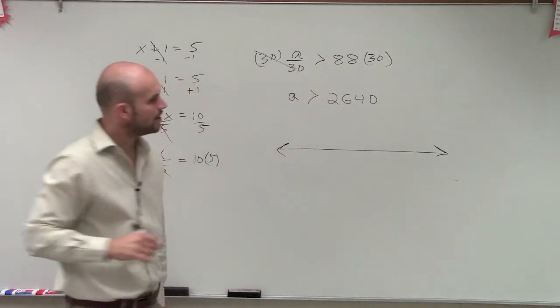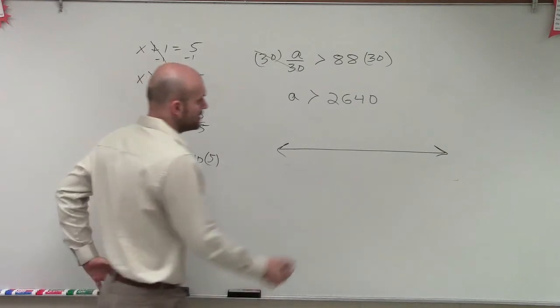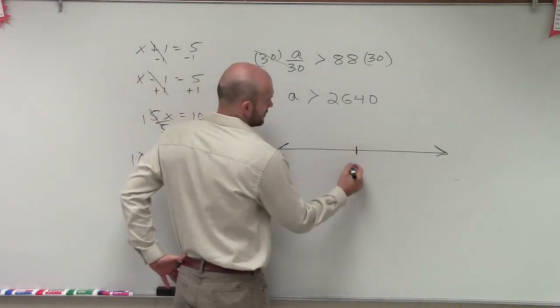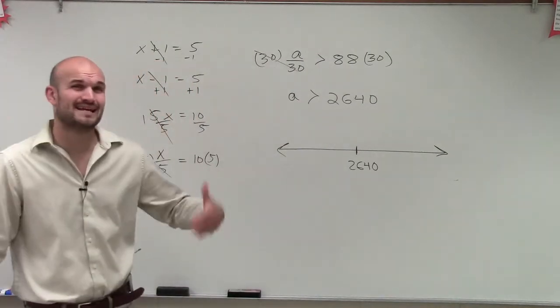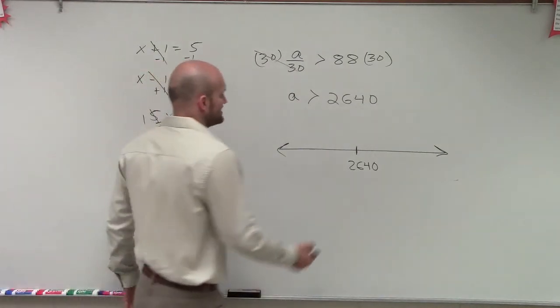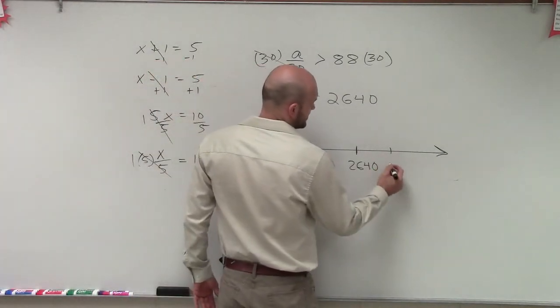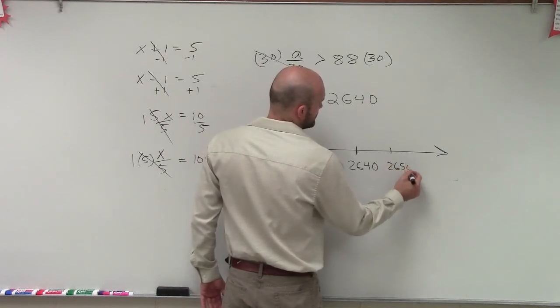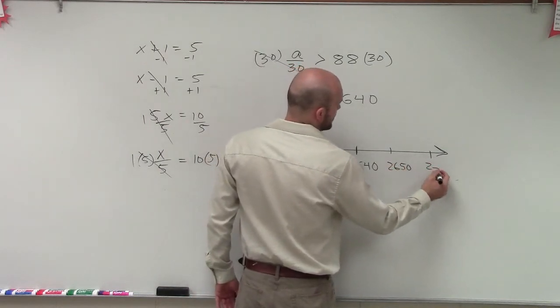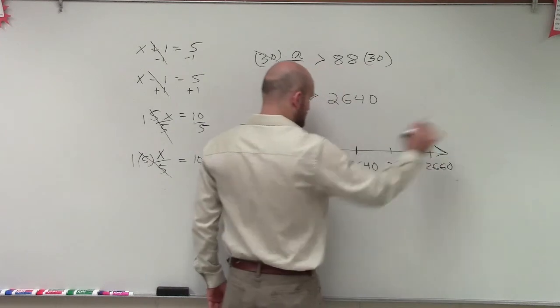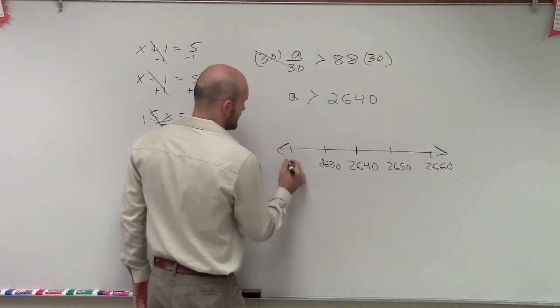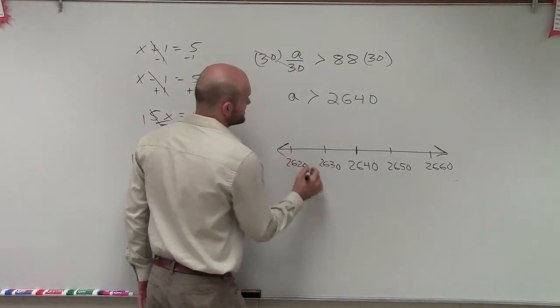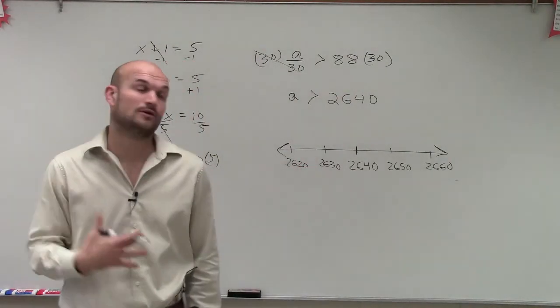OK, so what we're going to do here is I'm going to have 2,640. And I'm going to start off there. We can represent any increments we want. I'm going to go by 10s, just because these are larger numbers. And I just want to show where the numbers that are greater than is going to be going to the right, and numbers that are less than are going to be going to the left. Then what's really helpful is to say our solution again out loud.